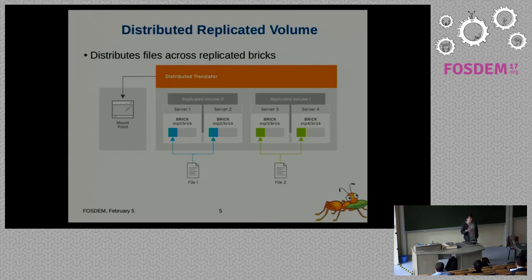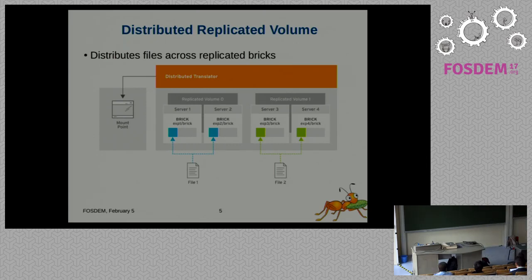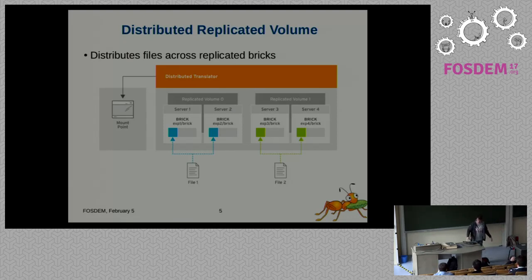Replication is one of the main features. This is a distributed replicated Gluster volume. On top there's a distribution algorithm, then the replication algorithm — very similar to how this mathematical description works. We do first the distribution on one layer and then the second layer does the replication. In our case it's completely disconnected, so we run into these kinds of problems: there's no connection between those algorithms and that's not always the most efficient use of disks.